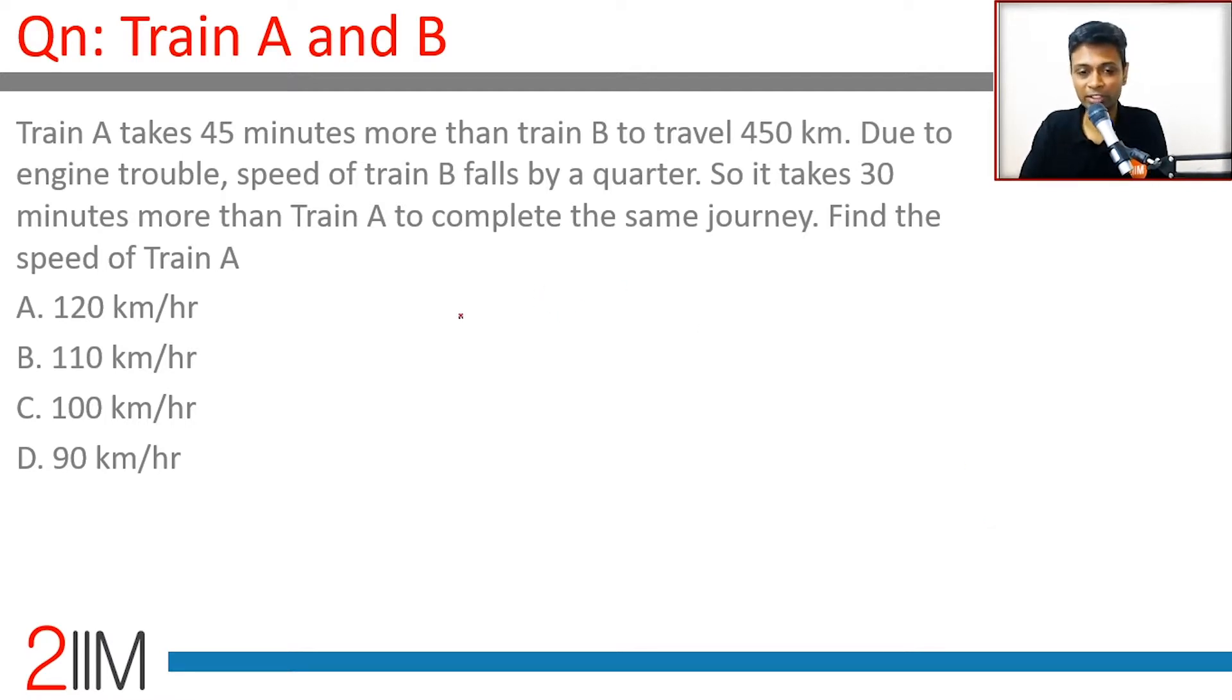Now I'm going to simplify this. I'm going to forget A. I'm going to talk about two instances: normal B and slow B. Very simple. Normal B has a speed of b.